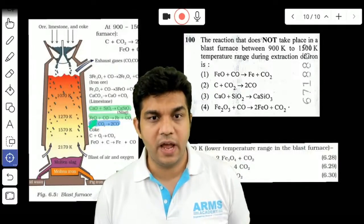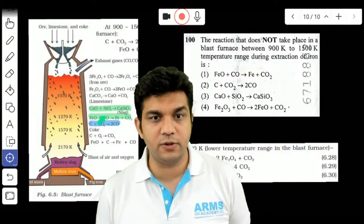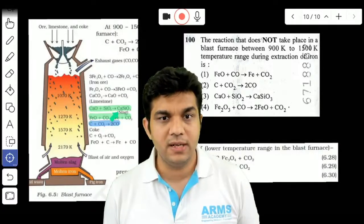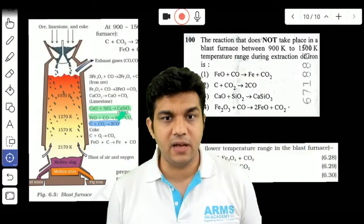C plus O2 gives you CO2, FeO plus CO giving you Fe plus CO2, and CaO plus SiO2 giving you slag, CaSiO3.